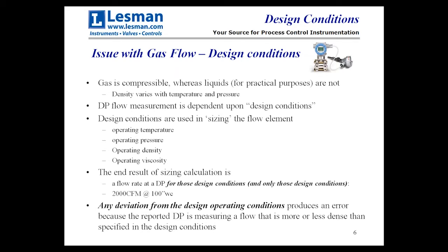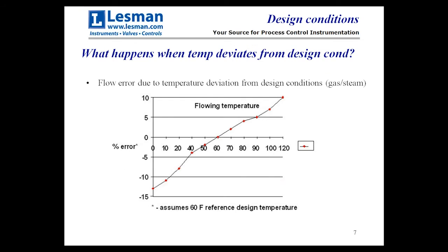The end result is that you get a flow rate at a given DP for those design conditions, but only for those design conditions. For example, 2,000 cubic feet per minute at 100 inches of water column — it will be quite accurate as long as all those operating conditions hold true. But if the temperature goes up or the pressure goes down, you'll still get a reading, but it will be an error from the design conditions, because any deviation from design operating conditions produces an error. You're reporting a DP that's measuring a flow more or less dense than what was accounted for in the design conditions.